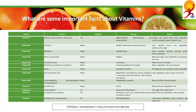Vitamin A is found in oranges, ripe yellow fruit, leafy vegetables, carrots, pumpkin, squash, spinach, and liver. I encourage you to take a screenshot of this so that you can learn and revise later.